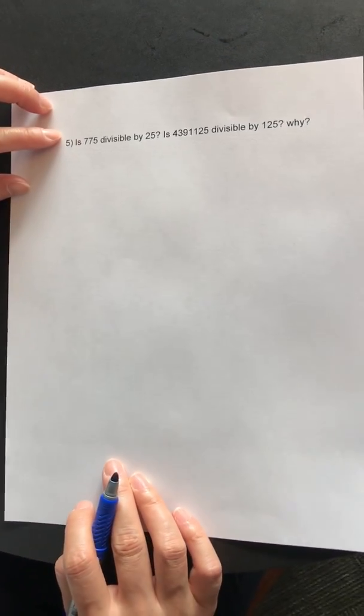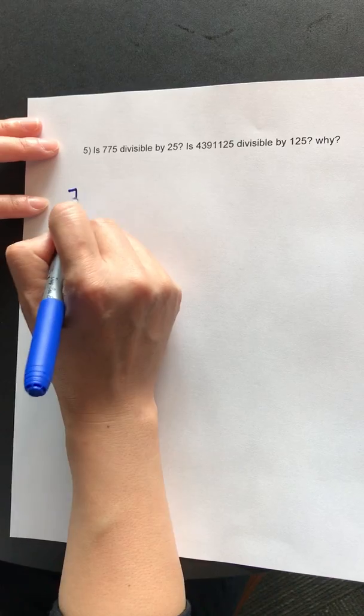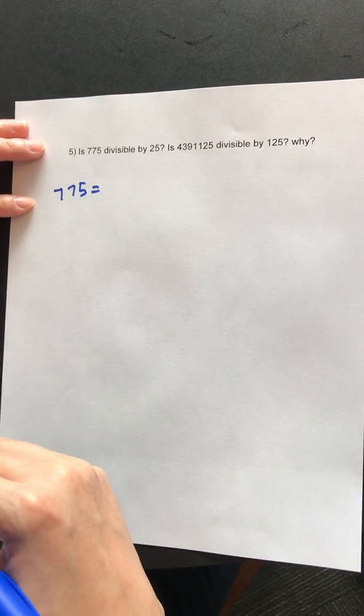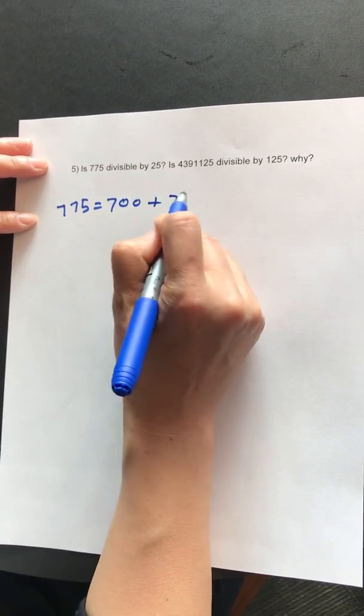Number five: Is 775 divisible by 25? Let's look at this first part. Again, using the technique to break this number down, you have 700 plus 75.